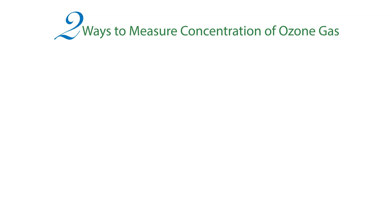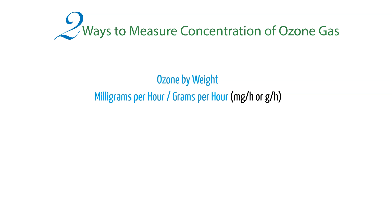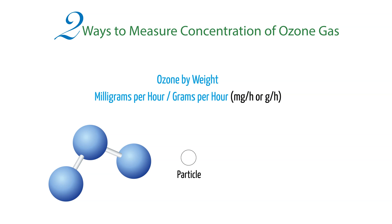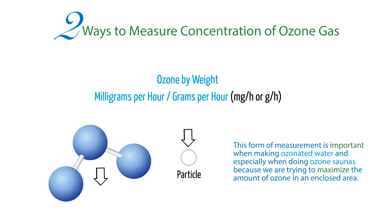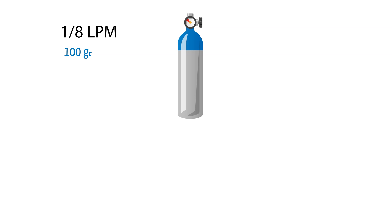The second most common form of ozone measurement outside of ozone therapy is ozone by weight. This can be measured in milligrams per hour or grams per hour. Think of ozone gas as a particle — the higher the ozone concentration, the greater the number of particles. As you lower the concentration, you get fewer and fewer particles. This form of measurement is important when making ozone water and especially when doing ozone saunas, because we are trying to maximize the amount of ozone in a closed area.